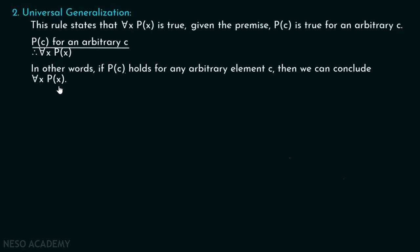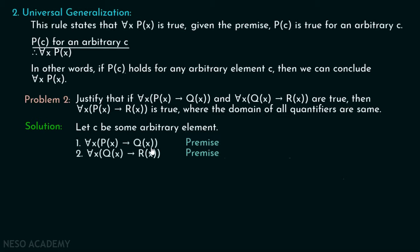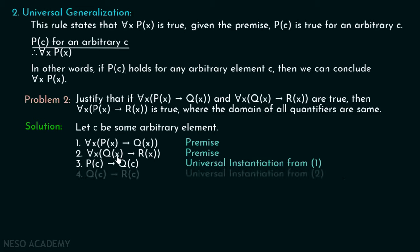Justify that if for all x, P(x) implies Q(x), and for all x, Q(x) implies R(x) are true, then for all x, P(x) implies R(x) is true, where the domain of all quantifiers is the same. Let c be some arbitrary element. The first premise is: for all x, P(x) implies Q(x). The second premise is: for all x, Q(x) implies R(x). From the first premise, we can derive P(c) implies Q(c), by universal instantiation, replacing x with c. Similarly, from the second premise, we get Q(c) implies R(c), again by universal instantiation.